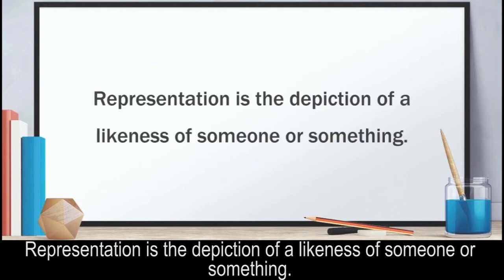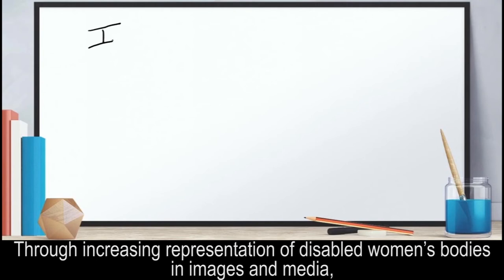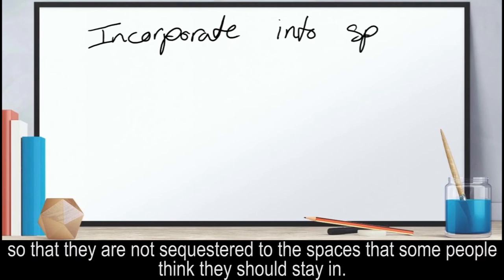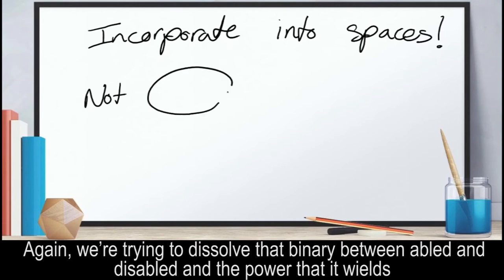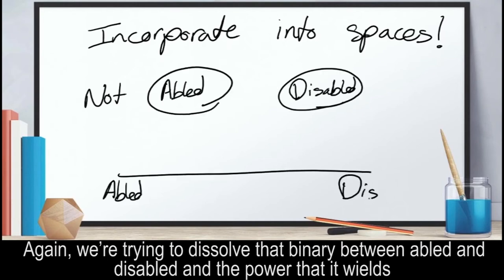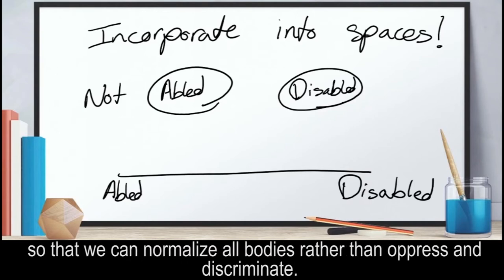Representation is the depiction of a likeness of someone or something. Through increasing representation of disabled women's bodies in images and media, we will be able to normalize the bodies so that they are not sequestered to the spaces that some people think they should stay in. Again, we're trying to dissolve that binary between abled and disabled and the power that it wields, so that we can normalize all bodies rather than oppress and discriminate.